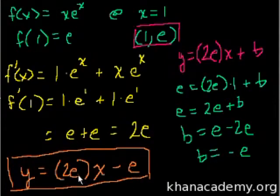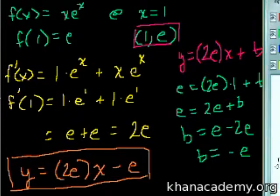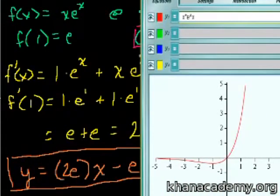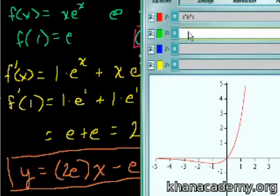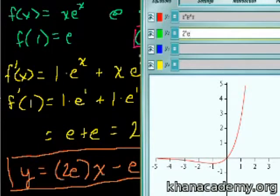If you don't like the e's, you can replace them with 2.7 etc., and this would become 5-point-something minus 2.7-something. But this form looks neater. Let's confirm by using the graphing calculator — let me type it in: 2 times e times x minus e. Let us graph this line.